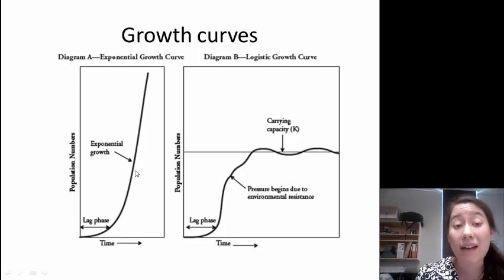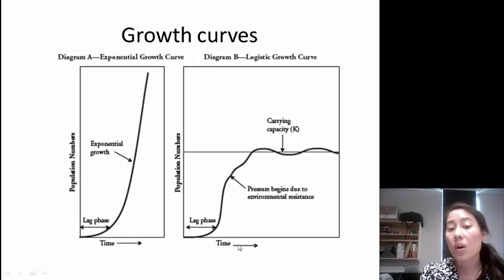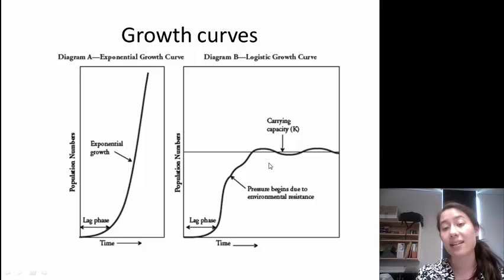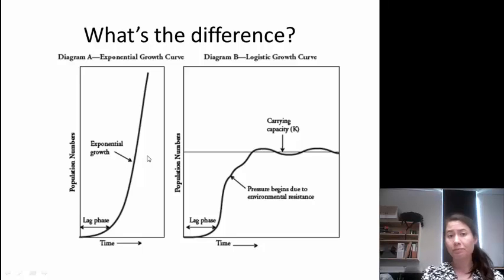In exponential growth, we see that the graph continues to climb and climb and climb. The population number increases and increases. Whereas in the logistic growth curve, we see that there's a leveling off of the population due to some sort of environmental resistance, and it reaches a number that we call the carrying capacity, which is always delineated as K. The graphs start off the same, but then end very differently. The population numbers differ as time goes on in these curves, and we want to be thinking about what are the causes of that.